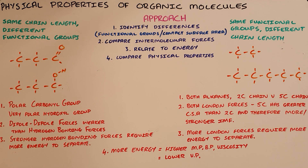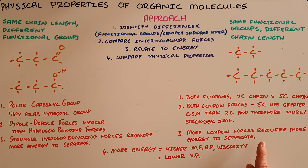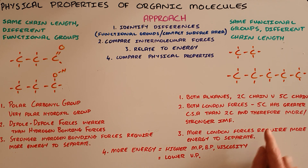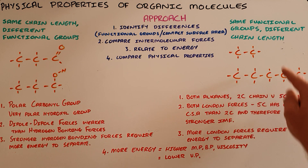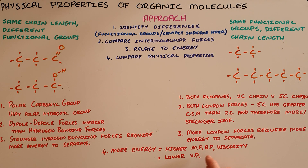Note that we are saying the five-carbon chain has more London forces — not different intermolecular forces — just more of them, and as a result stronger intermolecular forces. The third step is to relate that to energy: since the five-carbon chain has a greater contact surface area and therefore stronger intermolecular forces, it would require more energy to separate the five-carbon molecules than the two-carbon molecules. Finally, the fourth step is to state that since more energy is required to separate the five-carbon chain, it will have the higher melting point, boiling point, or viscosity, and the lower vapor pressure.